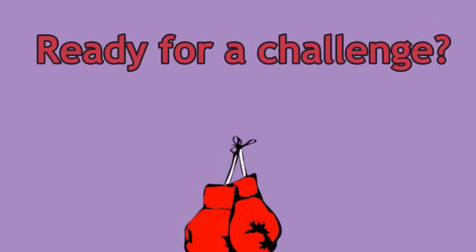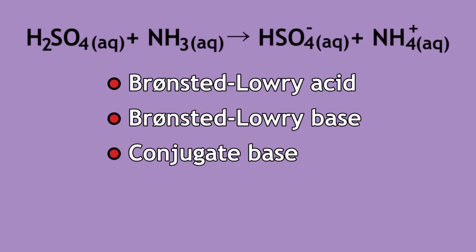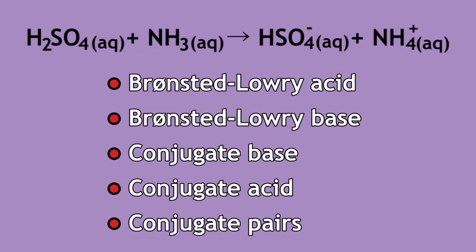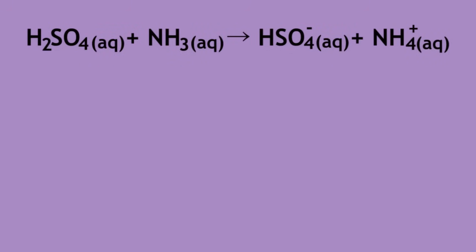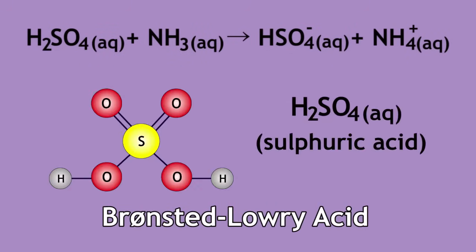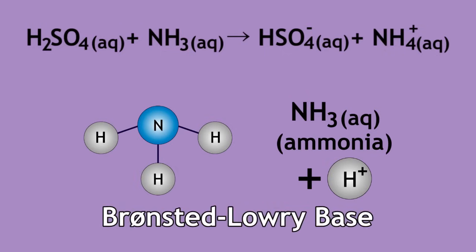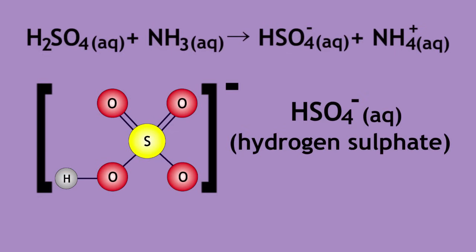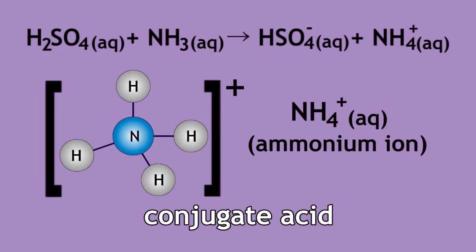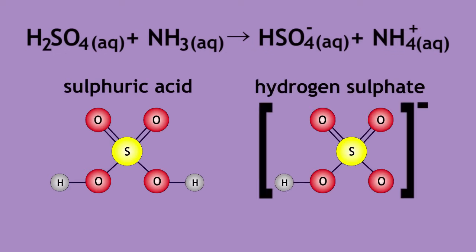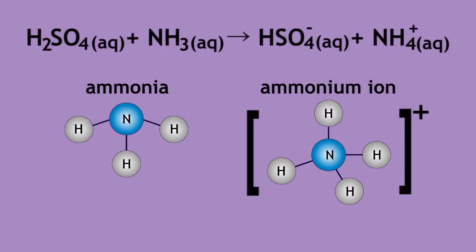Now, are you ready for a challenge? For this reaction, try to identify the Bronsted-Lowry acid, the Bronsted-Lowry base, the conjugate base, the conjugate acid, and the conjugate pairs. The Bronsted-Lowry acid is sulfuric acid as it releases a proton to ammonia. Since ammonia accepted the proton, it is the Bronsted-Lowry base. The hydrogen sulfate ion is the conjugate base of sulfuric acid, and the ammonium ion is the conjugate acid of ammonia. Therefore, sulfuric acid and the hydrogen sulfate ion form a conjugate pair, and ammonia and the ammonium ion form another conjugate pair.